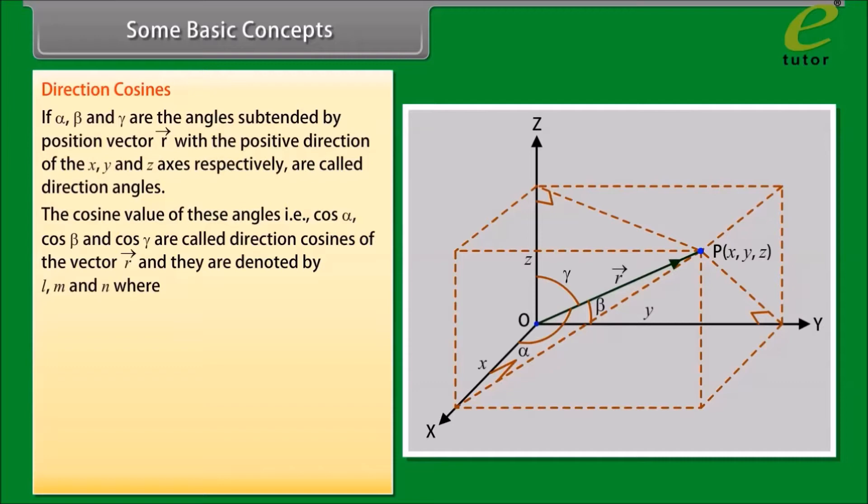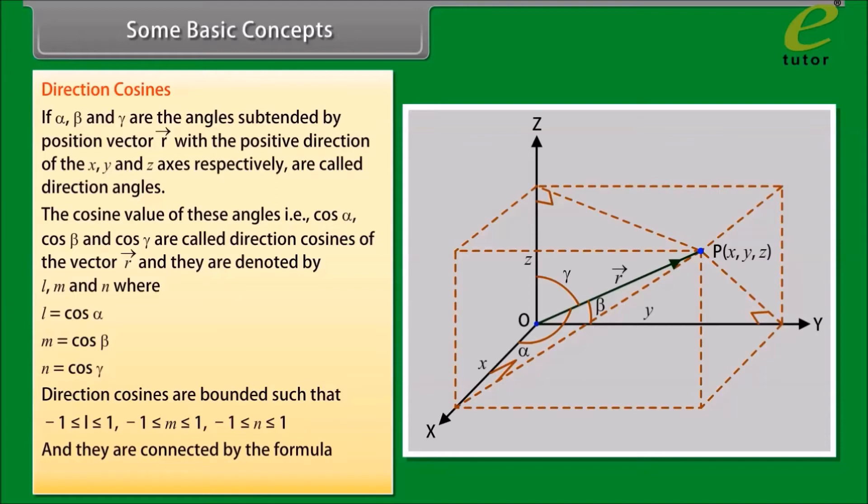The cosine values of these angles, i.e., cos alpha, cos beta, and cos gamma, are called direction cosines of the vector R and they are denoted by L, M, and N, where L equals cos alpha, M equals cos beta, and N equals cos gamma. Direction cosines are bounded such that minus 1 less than or equal to L less than or equal to 1, minus 1 less than or equal to M less than or equal to 1, minus 1 less than or equal to N less than or equal to 1, and they are connected by the formula L square plus M square plus N square equals 1.